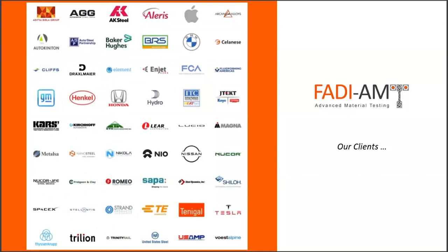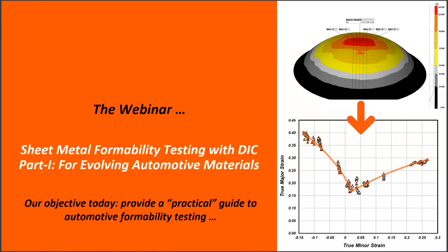We work with multiple clients, mainly from the automotive sector. We work with many OEMs and suppliers of aluminum and steel, and tier one suppliers on different topics. Today's webinar is about metal formability — a very big and important topic to the automotive sector. Our objective today is to provide a practical guide to automotive formability testing. Whether you are new to the topic or trying to bring formability testing in-house, we hope to provide a very good background about how to do that — what to pay attention to in terms of infrastructure, testing, and analysis, especially with DIC.